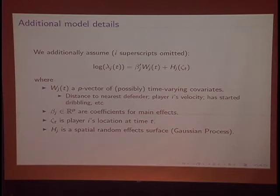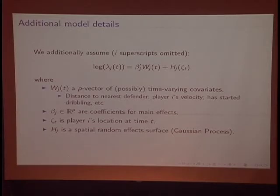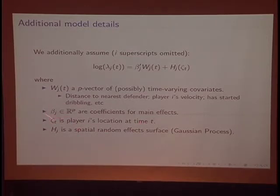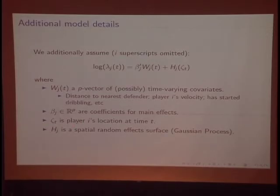We additionally parametrize these Poisson intensities. W is a time-referenced vector of covariates — things like how close is the nearest defender to the player with the ball, is the player dribbling, is he moving fast. Beta are the coefficients for those covariates. Zeta_t is the actual XY location of the player with the ball at time t, taking values on the space of the court. And h is a function that maps that position to a real number contributing to the log intensity of making a given event happen.